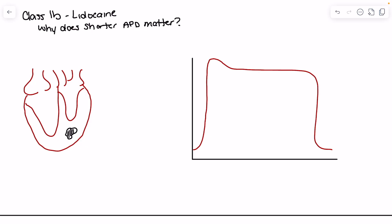What's happening when we have ischemic tissue is it is releasing intracellular contents. We start to see the release of potassium, and we will see an increase in resting membrane potential of the surrounding tissue. So one of the critical things to remember when looking at ischemic tissue is that the resting membrane potential is higher, because of that release of potassium from intracellular contents.